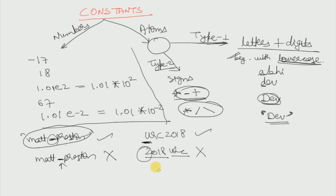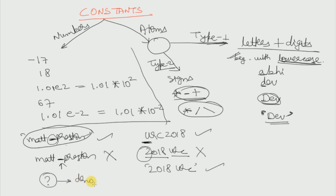I hope you understood. One more example: if we write '2018urc' and give it a single quotation mark, then this is a perfect atom, because with single quotation marks whatever we write inside is always an atom. Also note: the question mark symbol denotes 'denotes', and the other symbol represents 'rules' in Prolog, and these two are atoms.